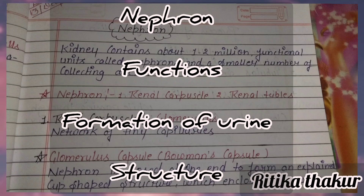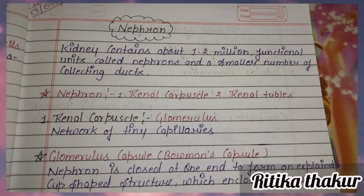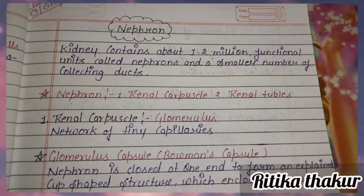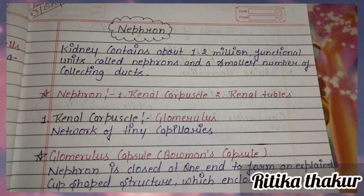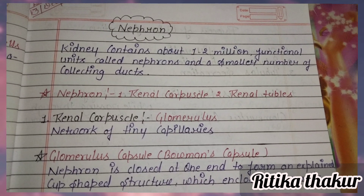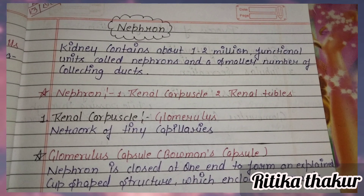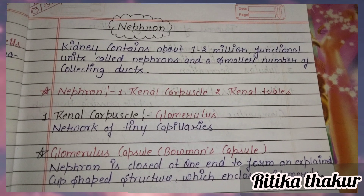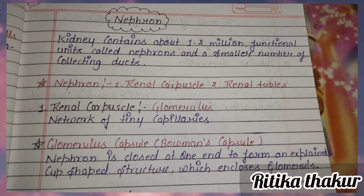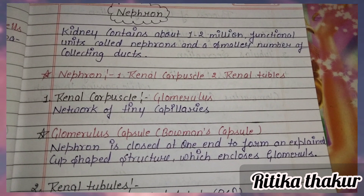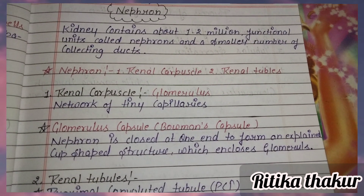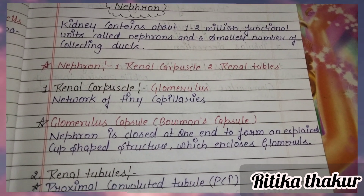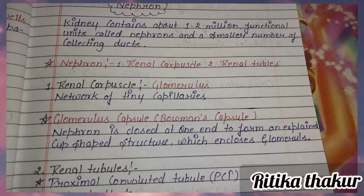The kidney contains about 1 million functional units called nephrons and a smaller number of collecting ducts. The nephron consists of: first, the renal capsule; second, the renal tubules. The renal capsule contains the glomerulus, which is a network of tiny capillaries.